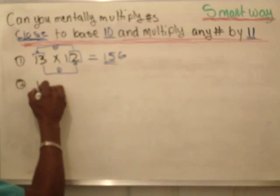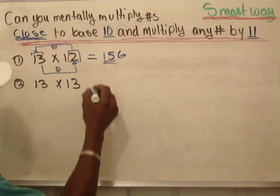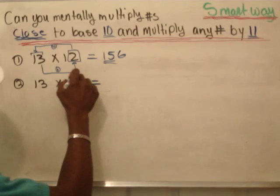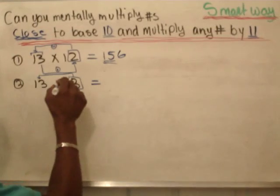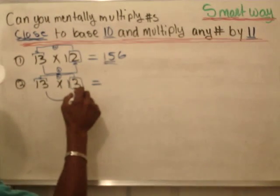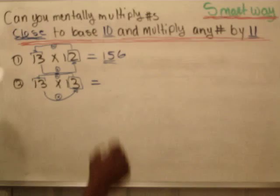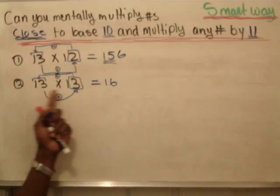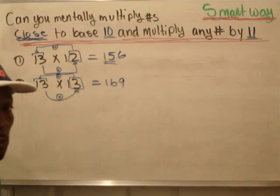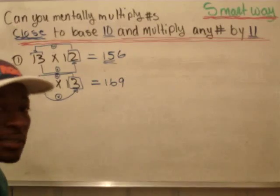Now let's try 13 times 13 and see what you come up with. We're going to add 3 onto 13, then we're going to multiply the last two numbers. Add 3 onto 13, it's going to give you 16. And then multiply those two numbers, it's going to give you 9. Once you know the technique, you won't need to go through the process of writing things down.